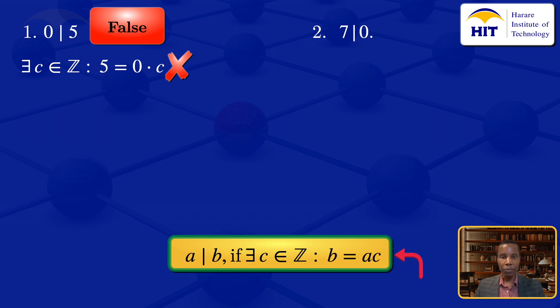We are using again this definition. We say that A divides B if there exists an integer C such that B equals AC. So in this case, we will say that 7 divides 0 if there exists an integer C such that 0 equals 7 times C.